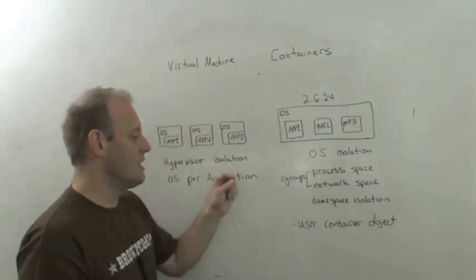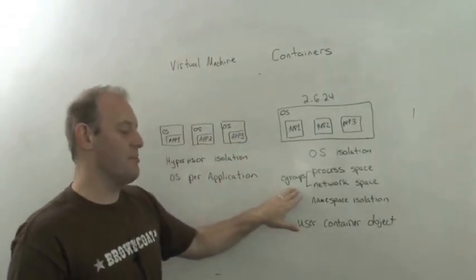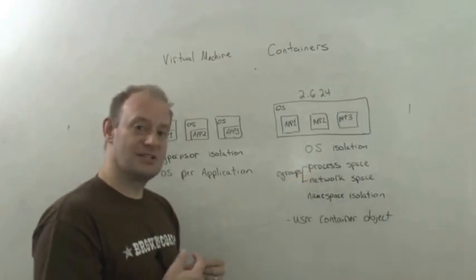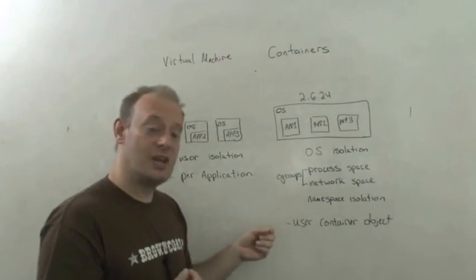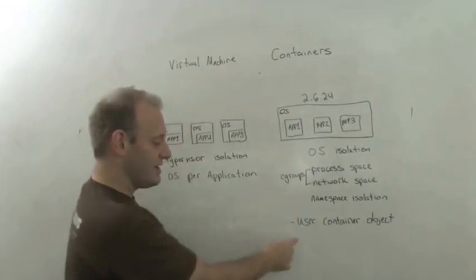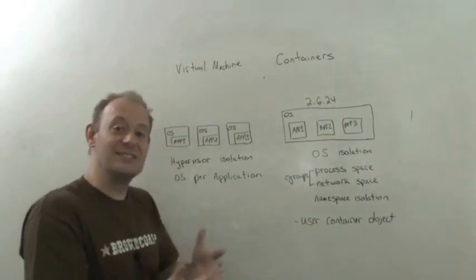So, how do we achieve that? Well, some features here that really revolve around Cgroups. It creates its own process space, it creates its own network space, and then it does namespace isolation as well, so that in the end it creates a user container object.